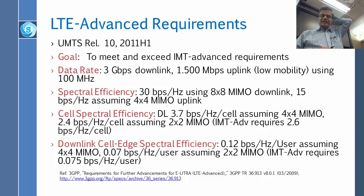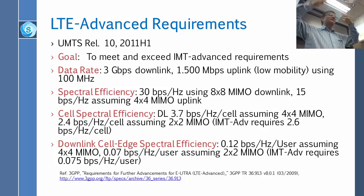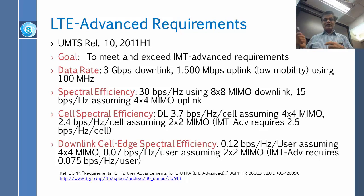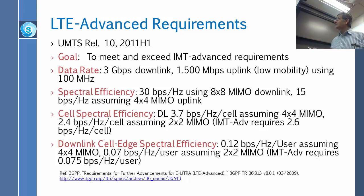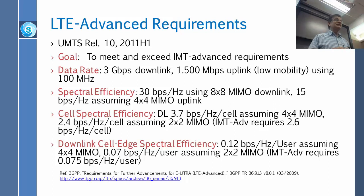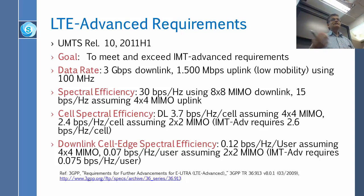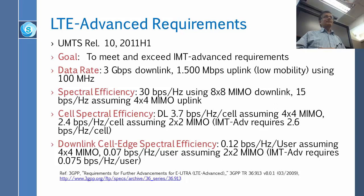The downlink spectral efficiency is much better than the uplink because the downlink comes from the base station, whereas on the uplink we are tiny transmitters so you get less. Downlink edge efficiency is 0.12 compared to 3.7 in the cell. The numbers you do not have to remember, but you should remember that downlink is always easier than uplink, and MIMOs are always higher on the downlink because you have a big antenna there.